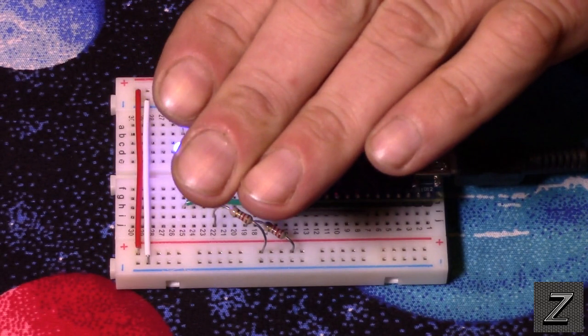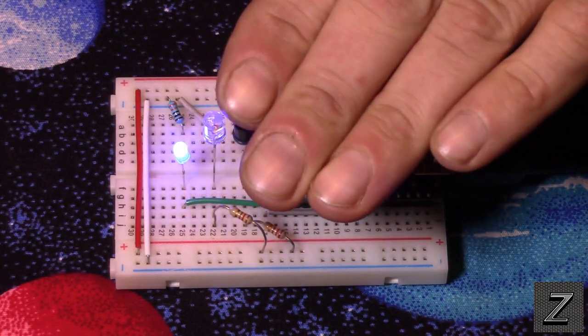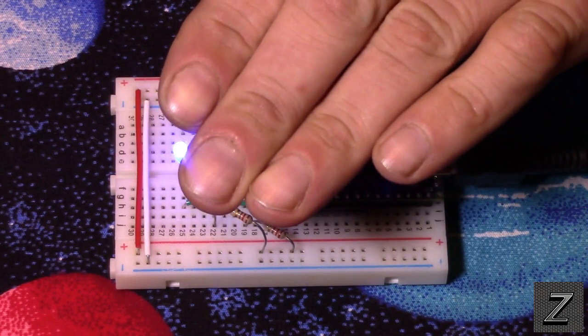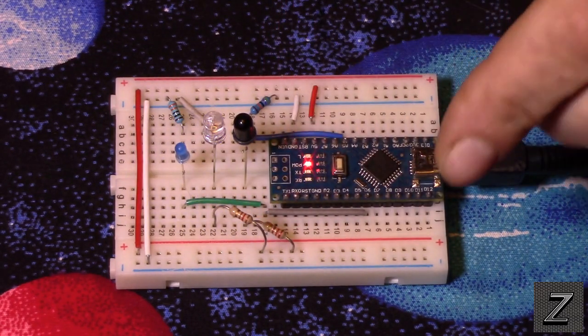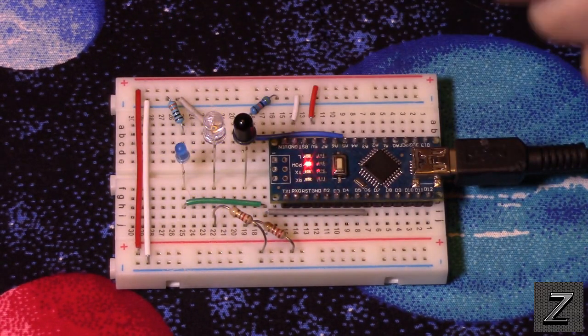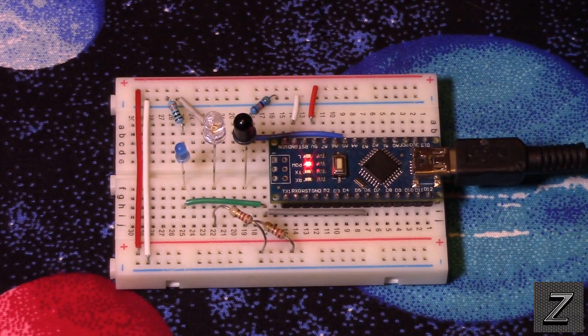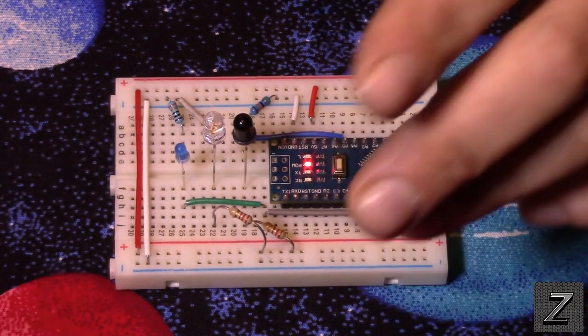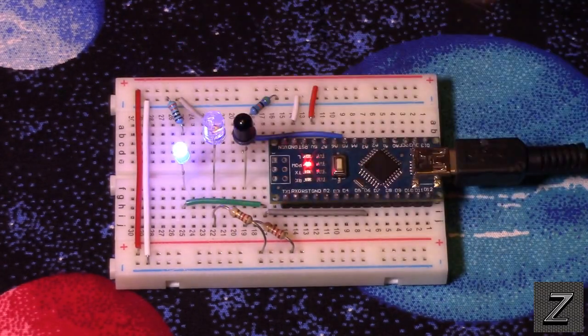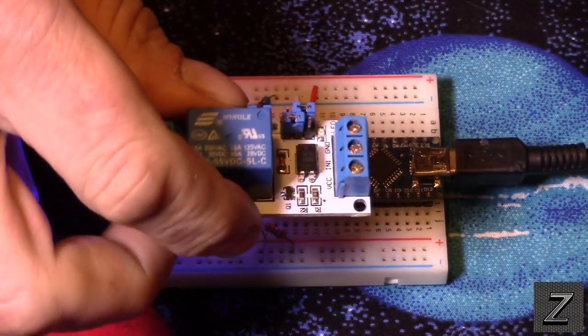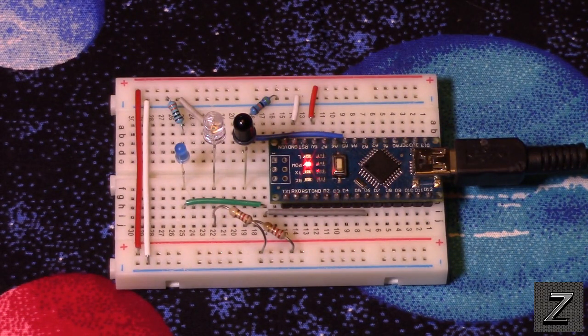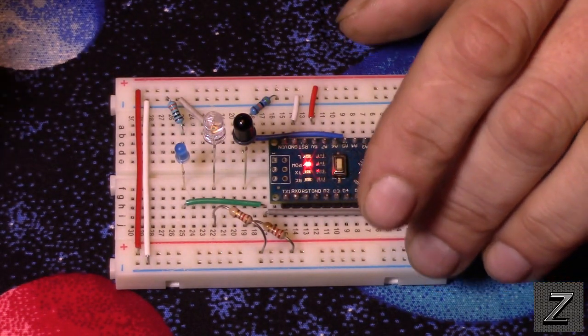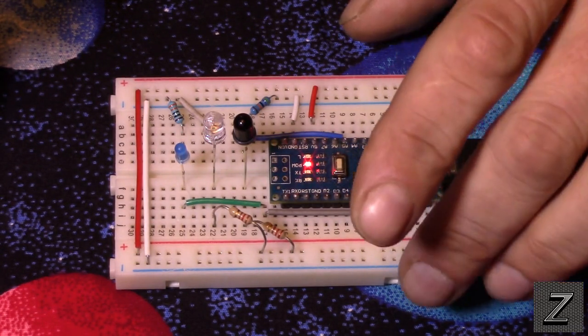But if you put your hand above it, it's reflecting the infrared light, and then the infrared transistor can pick it out. And it's telling the Arduino to turn the relay on. But of course, I'm using an LED just for demonstration purposes. Because normally, you'd want to have like a relay, or you could use a transistor or whatever to activate whatever you want to use this for.